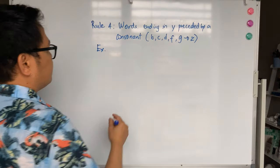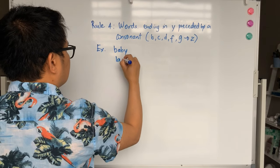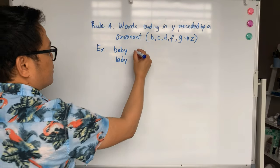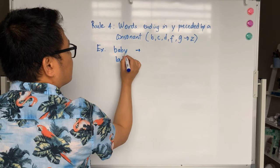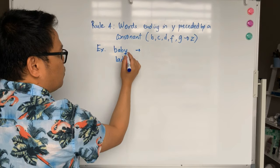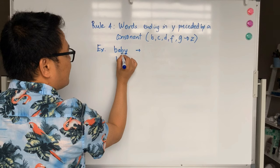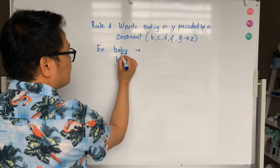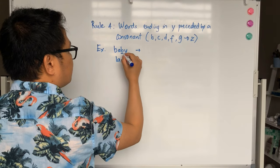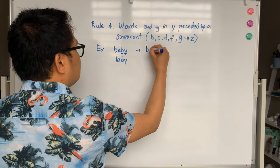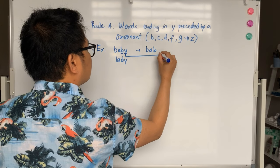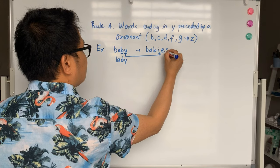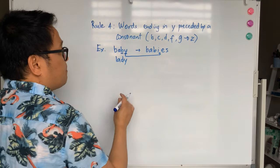For example, baby, lady. As you can see here, the word ends in Y and the first letter before that is B which is a consonant. With this rule, what you're going to do is you need to change Y to I and then you add E-S. So, baby will become babies.